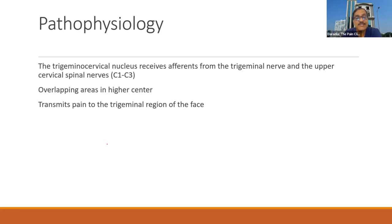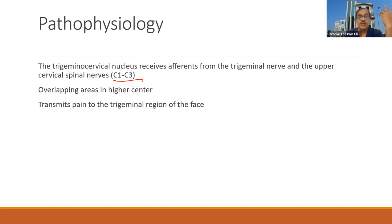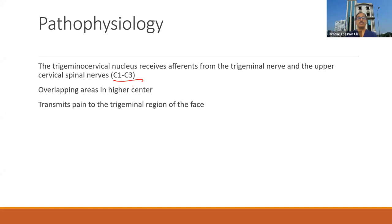Pathophysiology — why is there headache from neck pathology? Very important is that the trigeminal nerve rootlets supplying the face and head areas go down to the C3 nerve roots in the spinal cord. That means there is an overlapping between the C1, C2, C3 nerve roots and the trigeminal nerve rootlets. So pain originating from the neck can be referred into the area supplied by the trigeminal nerve. This is one of the important hypotheses for why neck structure pathology can present with headache.